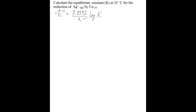where you have the reduction of silver by copper. Silver is being reduced, and when you have a reduction, you have a gaining of electrons. So silver is going to gain an electron to become a silver solid. When you look up the standard reduction potential for that half reaction in the table of standard reduction potentials, you find 0.80 volts.